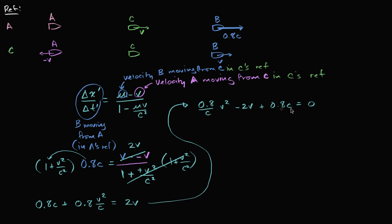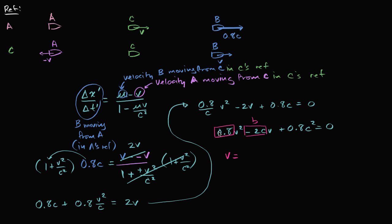If we multiply both sides by c, this will become 0.8v squared minus 2cv plus 0.8c squared equals 0. We could keep trying to algebraically manipulate this, but we can just go straight to the quadratic formula here to solve for v. This is our b, this is our a, and this is our c — the coefficients using the quadratic formula.